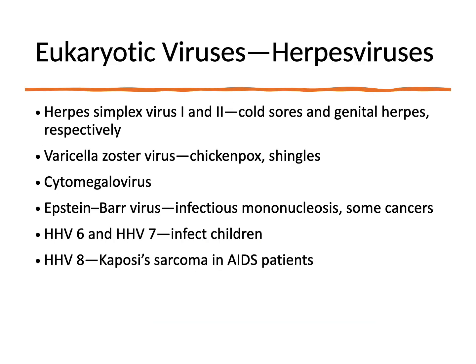Examples of double-stranded DNA eukaryotic viruses include herpes simplex virus 1 and 2, responsible for cold sores and genital herpes respectively. This group also includes varicella virus, responsible for chicken pox and shingles; CMV; Epstein-Barr virus, which causes mono and can also lead to some cancers; HHV-6 and HHV-7 that can affect kids; and HHV-8, which leads to Kaposi's sarcoma in HIV/AIDS patients — a very specific type of cancer seen as a co-infection.